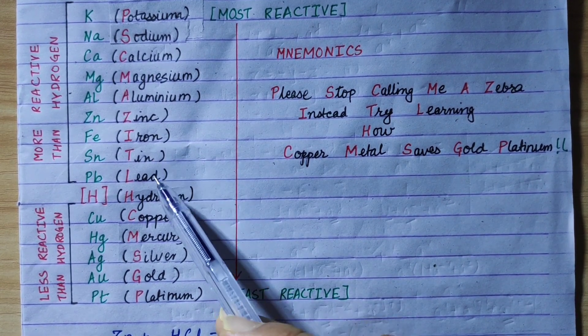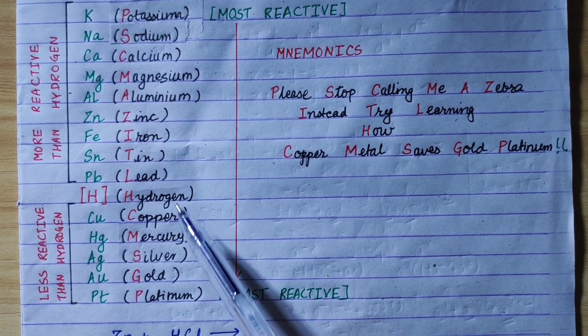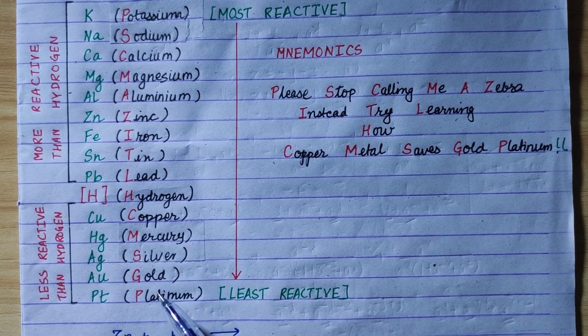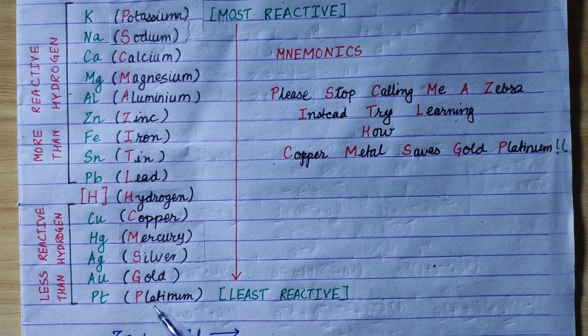Continuing the mnemonic: Iron, Tin, Lead, Hydrogen, Copper, Mercury, Silver, Gold, Platinum — "try learning how copper metal saves gold and platinum."